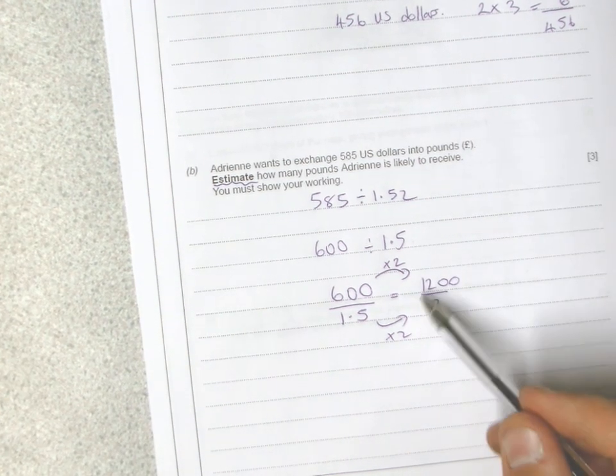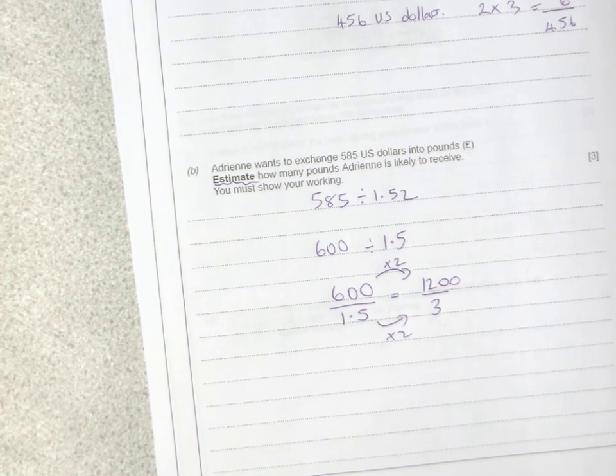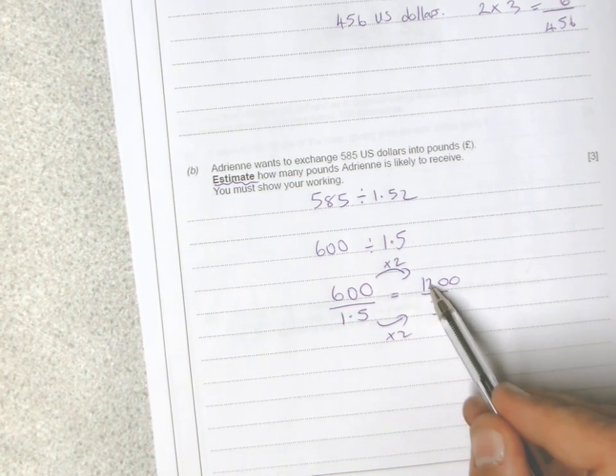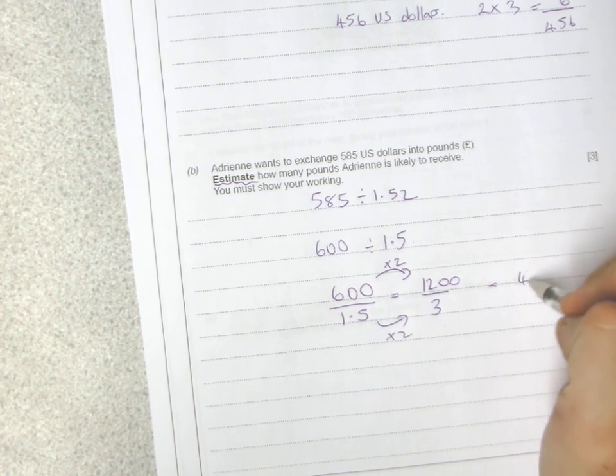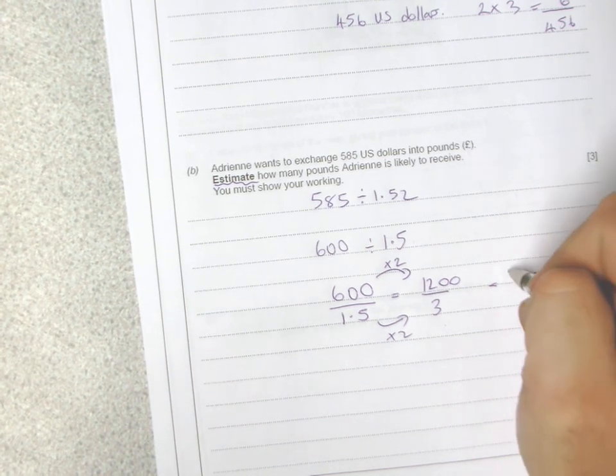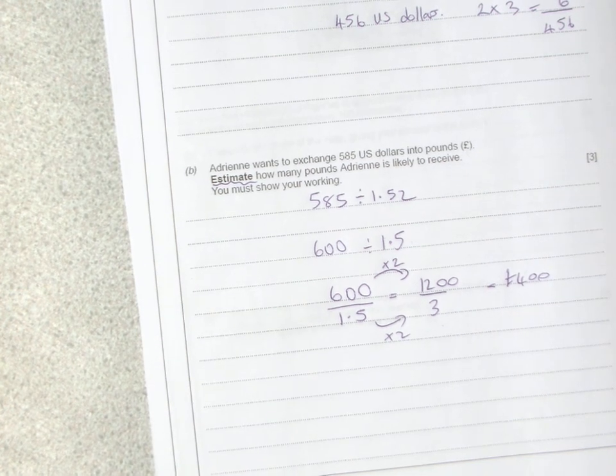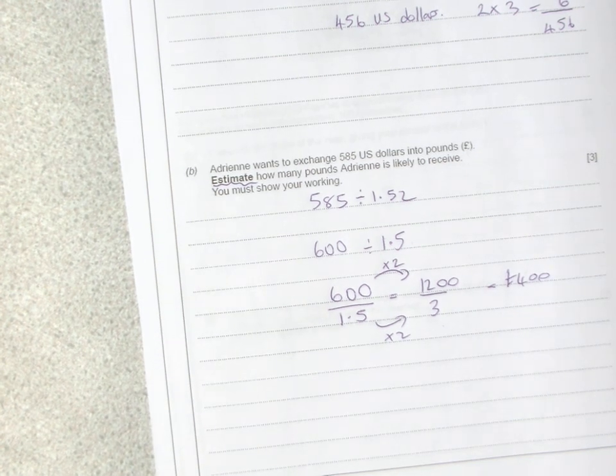That's really easy because 12 divided by 3 is 4, so 1200 divided by 3 is going to be 400. Of course, 400 pounds would be our answer.